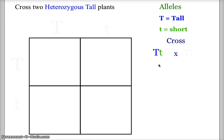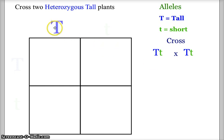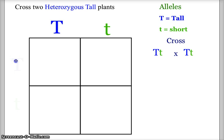Since we are crossing two of the same plants, the second parent is also capital T, lowercase t — heterozygous. When we segregate the alleles for these two parents, we get capital T and lowercase t on the top, and capital T and lowercase t on the left.